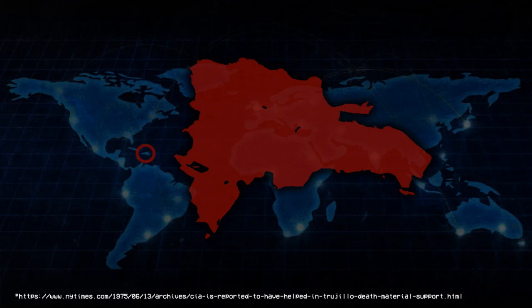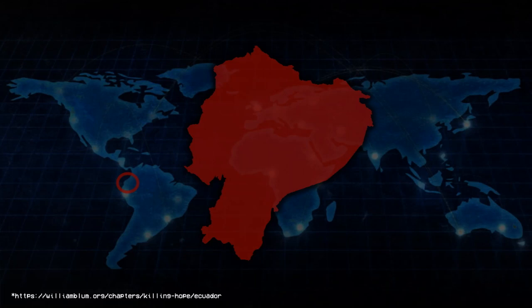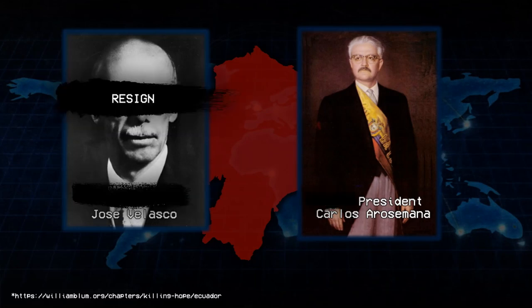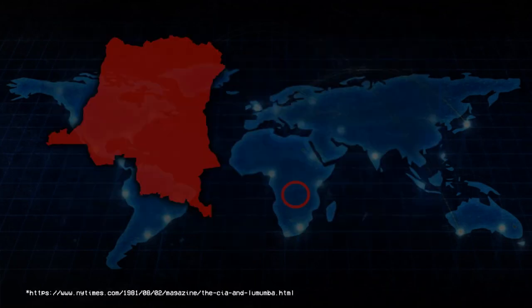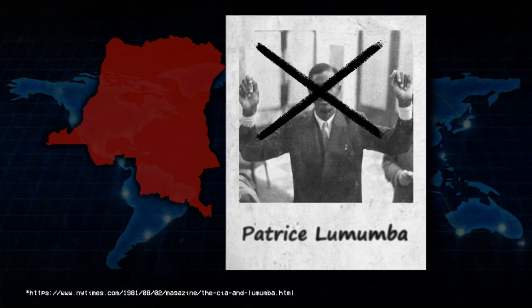Dominican Republic. The CIA assassinates Rafael Trujillo, a murderous dictator Washington had supported since 1930. Trujillo's business interests had grown so large — about 60% of the economy — that they had begun competing with American business interests. Ecuador: The CIA-backed military forces the democratically elected President José Velasco to resign, replacing him with Vice President Carlos Arosemana. The CIA fills the now-vacant vice presidency with its own man. Congo: The CIA assassinates the democratically elected Patrice Lumumba; however, public support for Lumumba's politics runs so high that the CIA cannot clearly install his opponents in power, and four years of political turmoil follow.